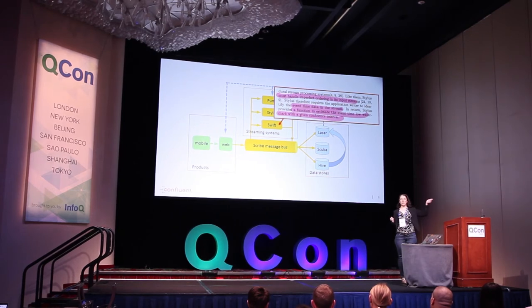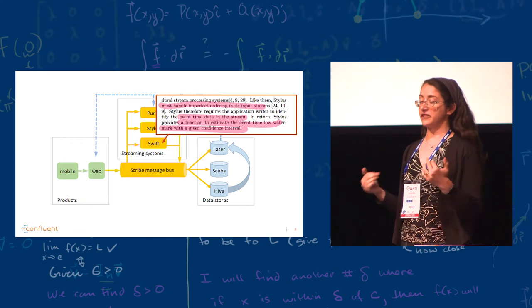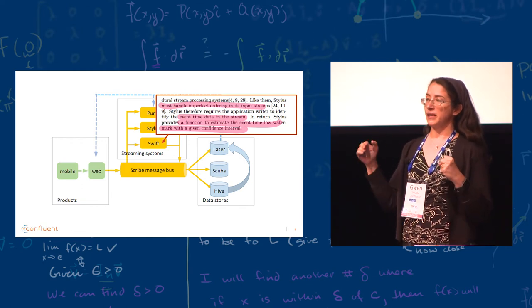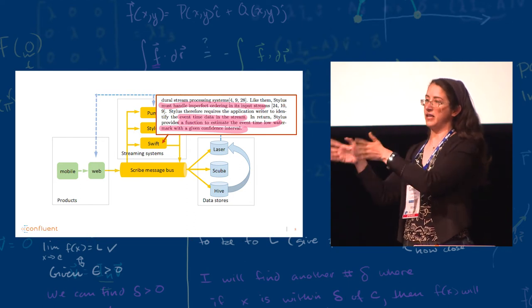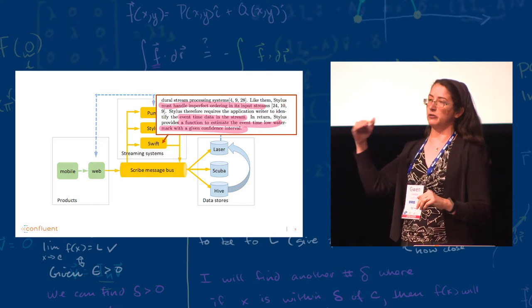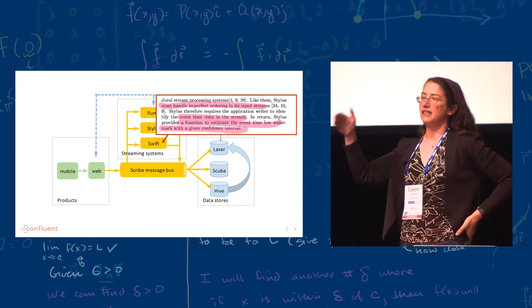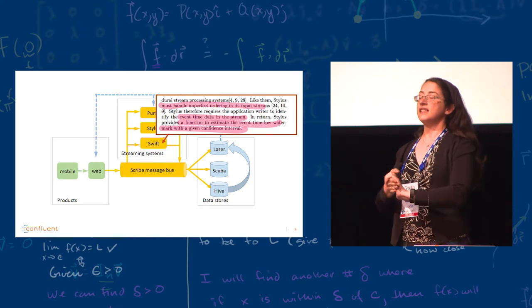And they still have to process it correctly. So they have to do something about all those late events. And they say that they do it. They get the original time from the device so they can do it. And one of the things that Stylus gives them is the ability to estimate what is the probability that we processed all the events for the last five minutes. And there's not late events somewhere in the system. So a low watermark. With 99% probability, we got all the information up to this point in time.